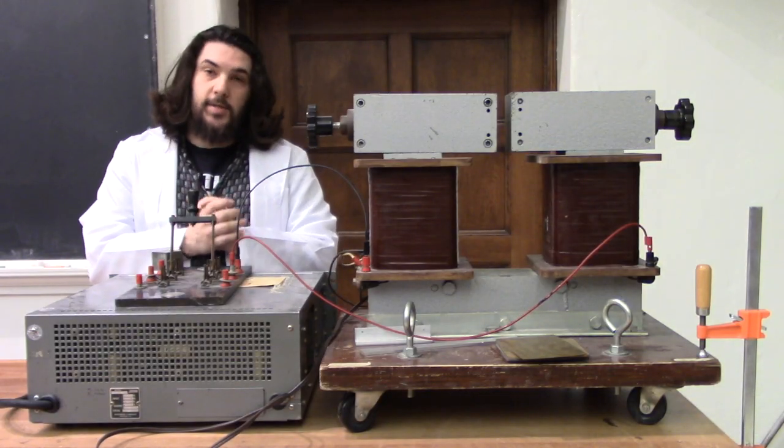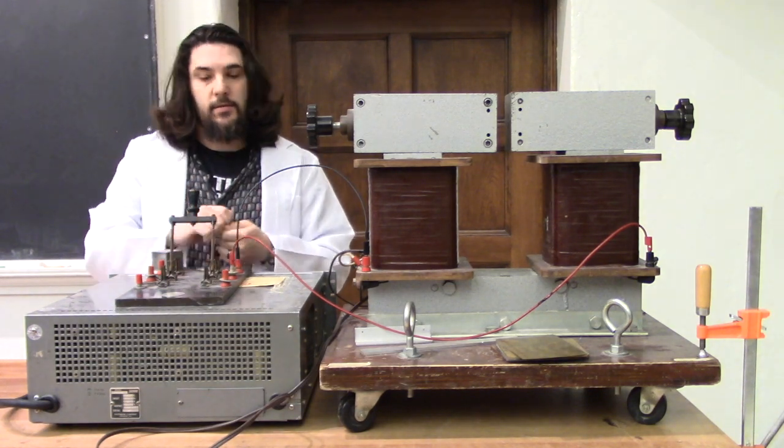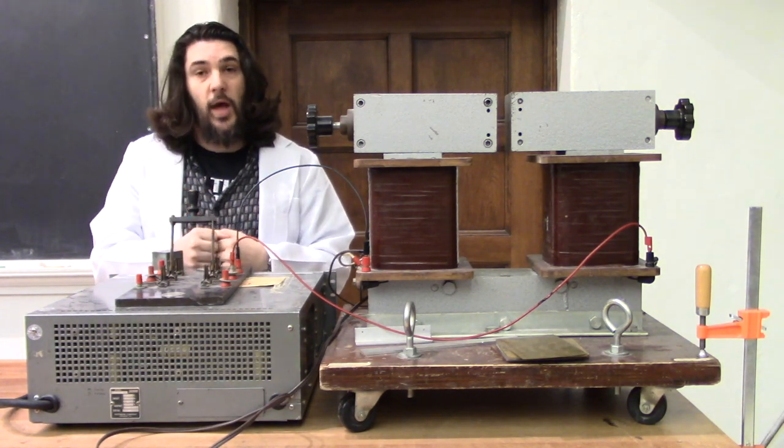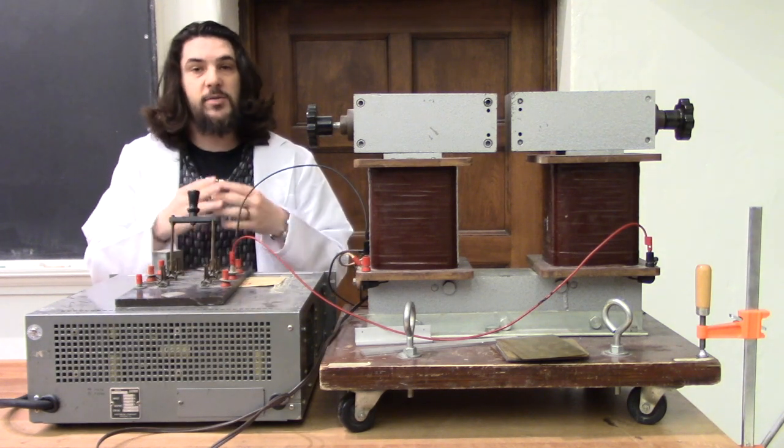There are a couple things you might have noticed. For one, once the short circuit had formed, it stayed. As long as I didn't take the switch too far away, that ion channel stayed there, because it had already formed and it was maintaining a current.